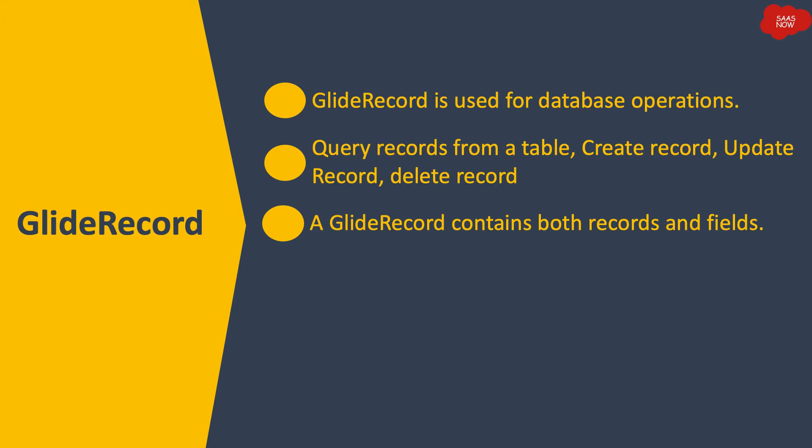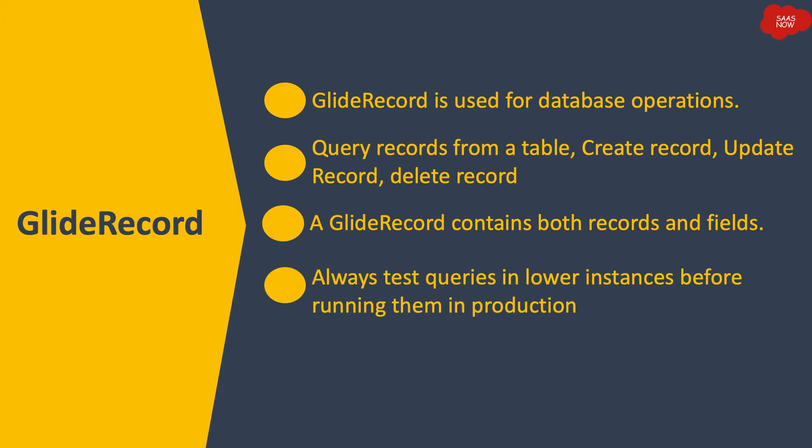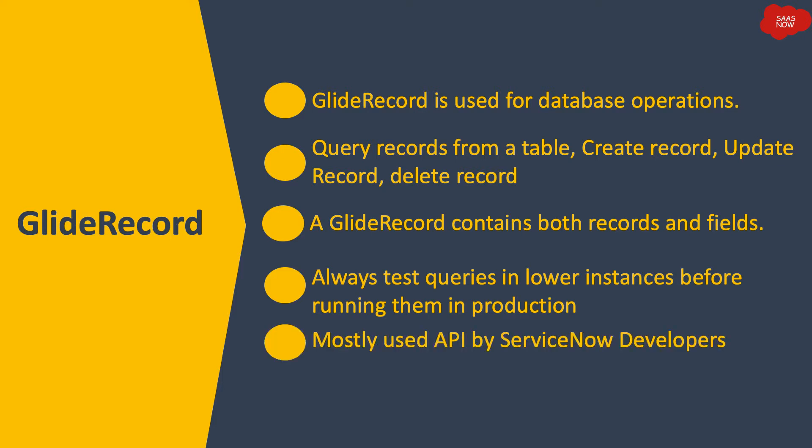Once you learn how to write GlideRecord queries and want to apply them in your instance, you have to make sure you are running those queries in a lower instance and not directly on the production instance. Make sure whatever script you have written is giving the expected result in the lower instance first, then you can run the same query in production.